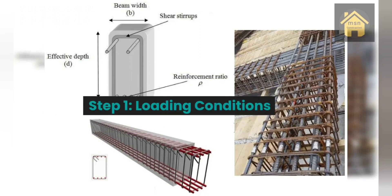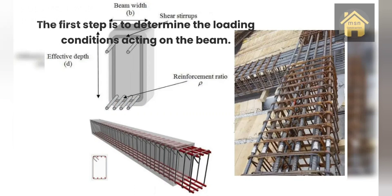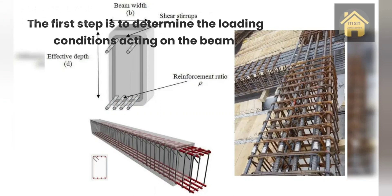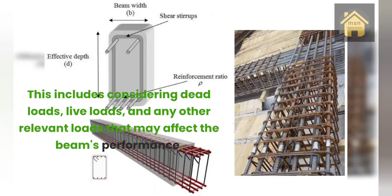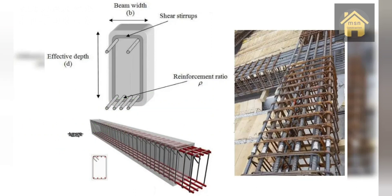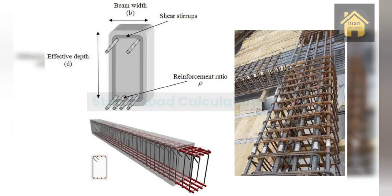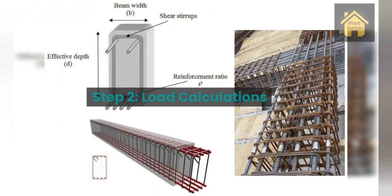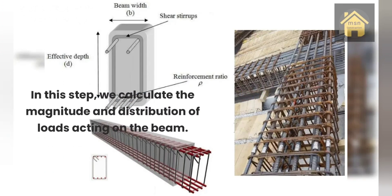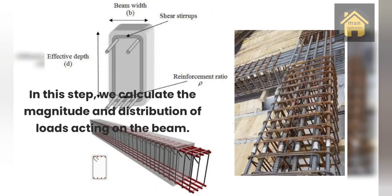Step 1 — Loading conditions. The first step is to determine the loading conditions acting on the beam. This includes considering dead loads, live loads, and any other relevant loads that may affect the beam's performance. By accurately identifying these loads, we can move on to the next step.